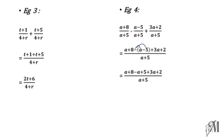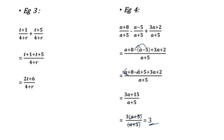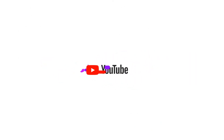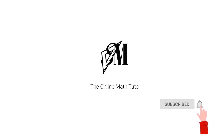After simplification: a and minus a cancel, leaving 3a plus 15 over (a + 5). Factorizing, 3 is common to 3a and 15, so take 3 out: 3(a + 5) over (a + 5). The (a + 5) terms cancel, giving the final answer of 3. I hope you understood how to simplify algebraic fractions and work with addition and subtraction. See you with another Smart Math clip — until then, goodbye!